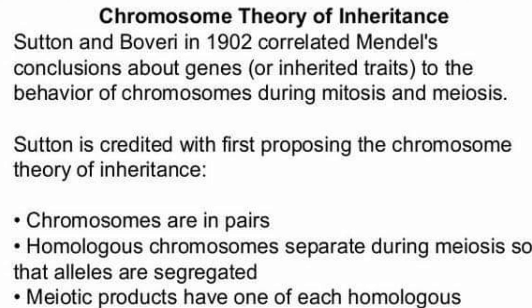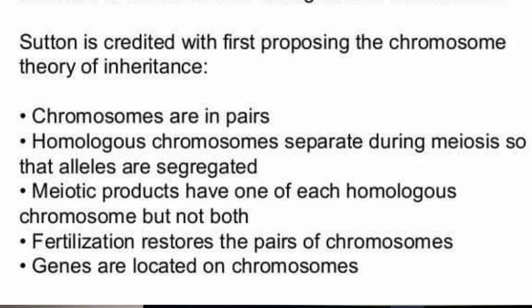Sutton and Boveri used the concept of chromosome movement to explain Mendel's law of inheritance — that is why this theory is called the chromosomal theory of inheritance. What they did was correlate Mendel's conclusions about genes with the behavior of chromosomes during mitosis and meiosis. They concluded that chromosomes are in pairs, homologous chromosomes separate during meiosis, and the meiotic product — the gamete — has only one of each homologous chromosome. The paired condition is restored at fertilization. All of this is parallel to what Mendel said about genes, because genes are located on chromosomes.